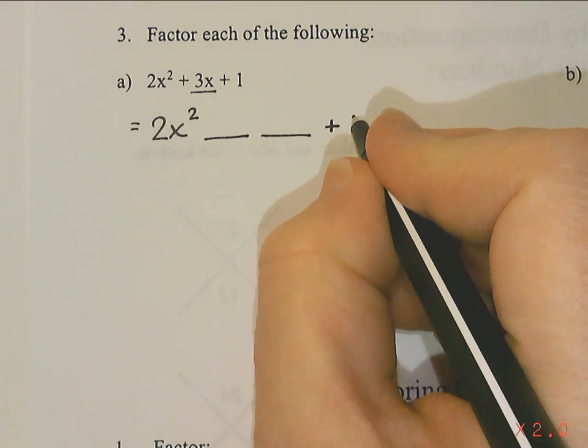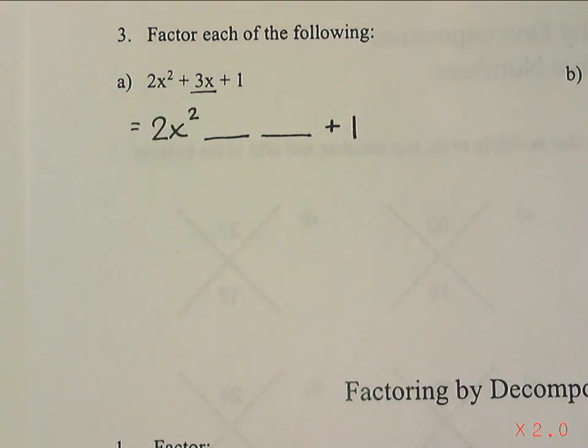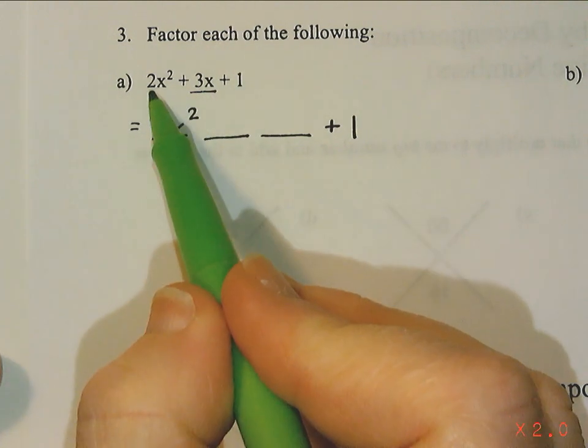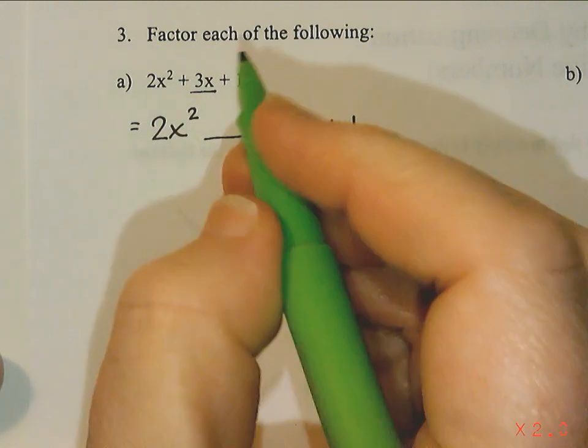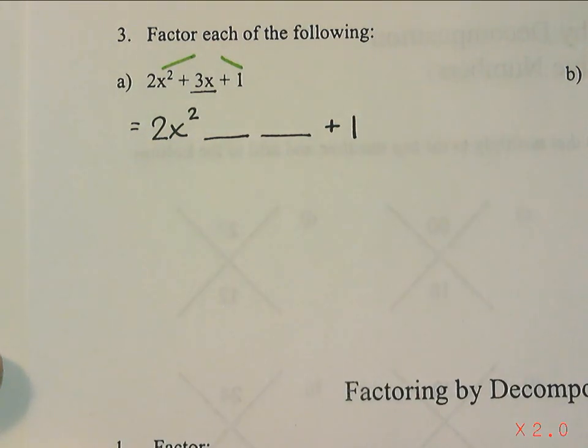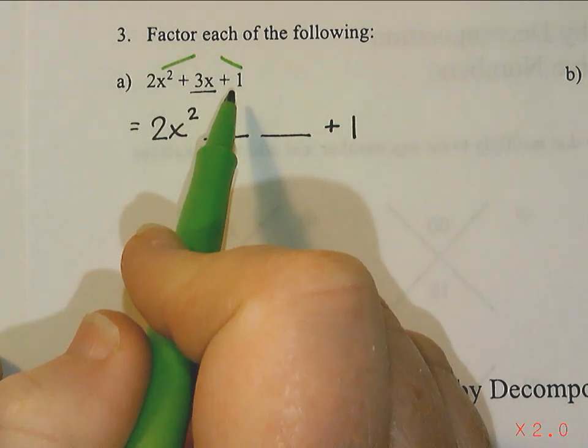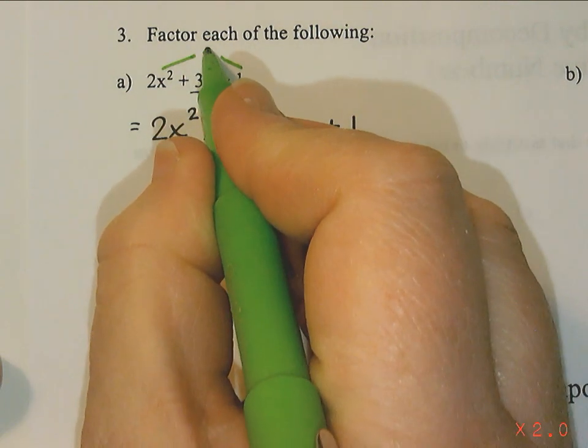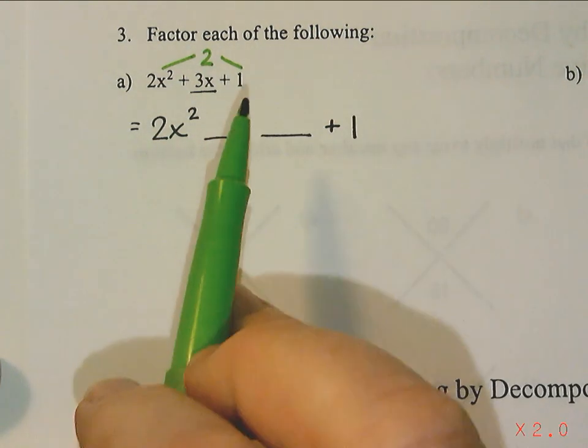Now to help us figure out what those two terms were, there is a clue hidden in the question and the clue is that first term and last term. If I take the first term and the last term and multiply them together, 2 times 1 is 2.